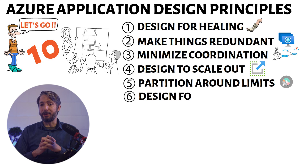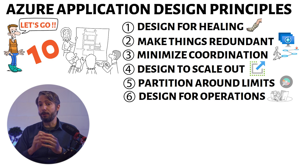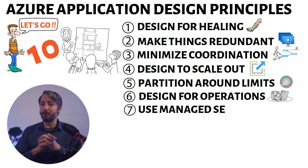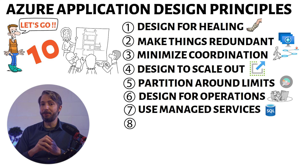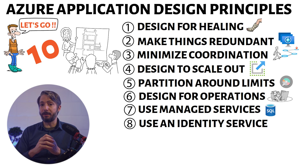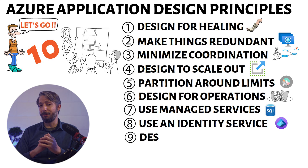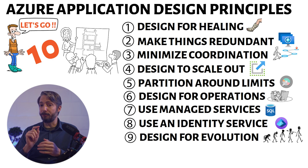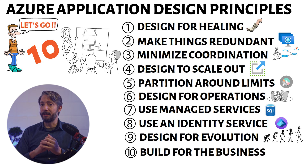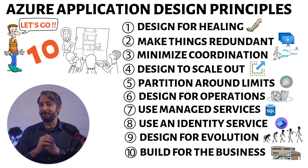Number five, partition around limits — use partitioning to work around limitations in, for example, databases, networking, and compute resources. Number six, design for operations — ensure that the operations team has the tools they need to properly support the application. Number seven, use managed services — when possible, use platform as a service, PaaS, instead of IaaS virtual machines. Number eight, use an existing identity service, such as Microsoft Entra, instead of building your own. Number nine, design for evolution — all applications change over time, so make sure the application design allows for continuous innovation. Number 10, build the needs according to the business — every design decision must be justified by a business requirement.